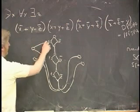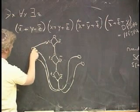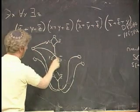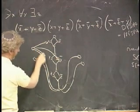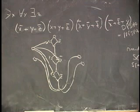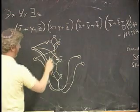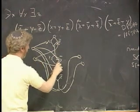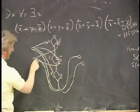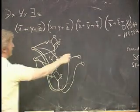C2 goes to X-bar, Y-bar, and Z. C3 goes to X, Y, Z.